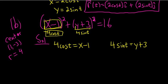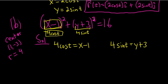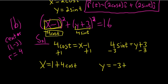All right. Now we can solve each of these for x and y. So adding 1 to both sides in the first equation, so plus 1 plus 1, we get x equals 1 plus 4 cosine t. And then subtracting 3 from both sides in the second equation, we get y equals negative 3 plus 4 sine t.